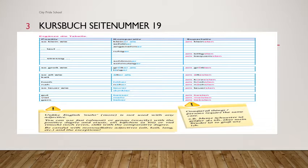Then laut: zo laut wie, lauter als — L-A-U-T-E-R. But while making the superlative, as it ends with T we add -ESTEN: am lautesten. I hope you remember the rule.